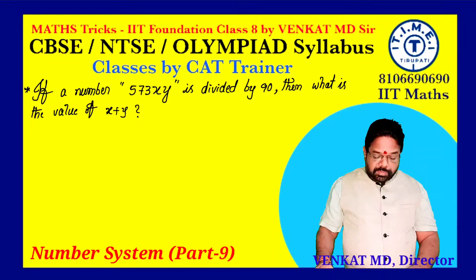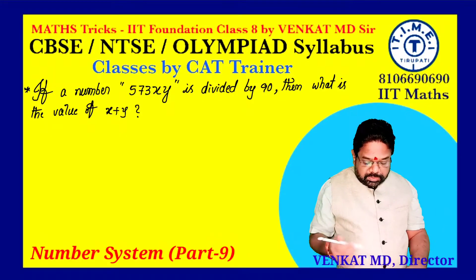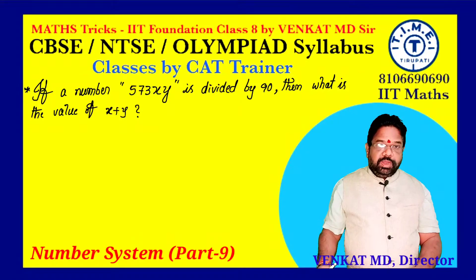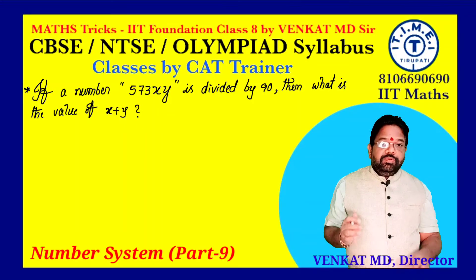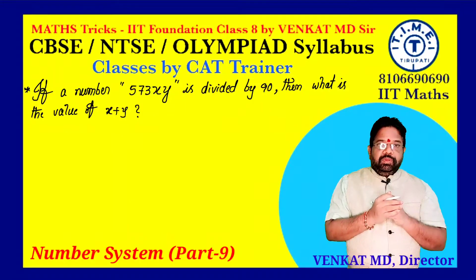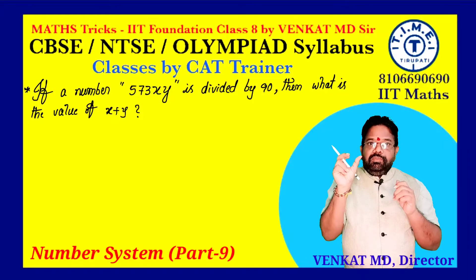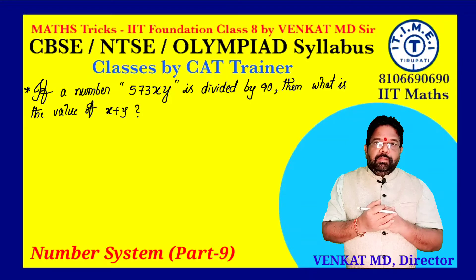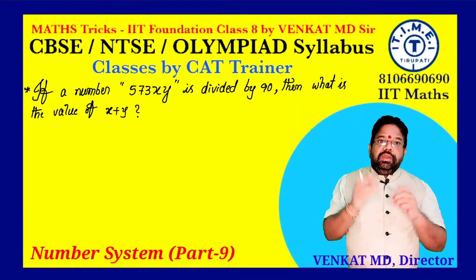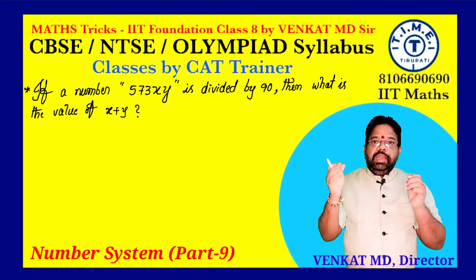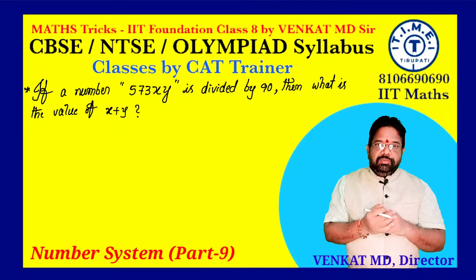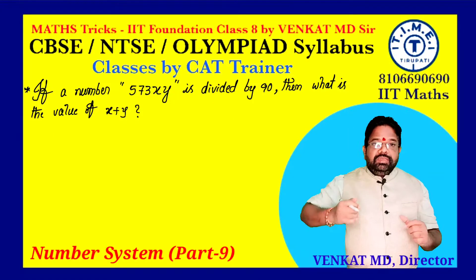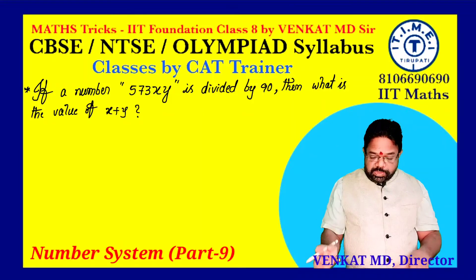If a number 573xy is divided by 90, then what is the value of x plus y? A number 573xy is given and you have to identify the values of x and y. The condition is that the number must be exactly divisible by 90.